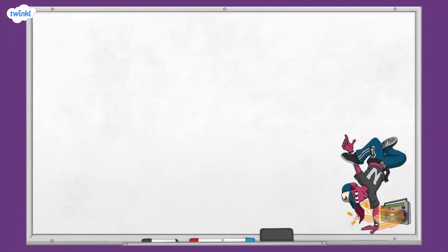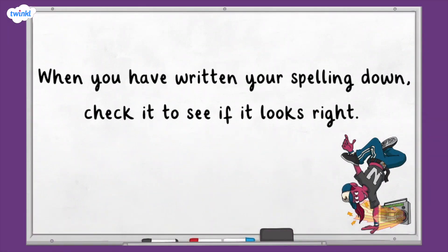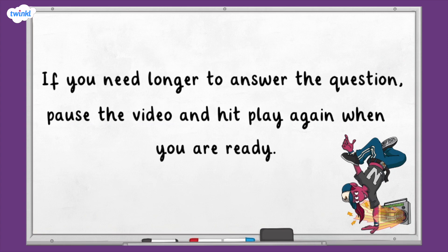For the final activity, you'll see a set of three sentences on the screen and each sentence will have a missing word. I'll say the word, then the word within a sentence, and then I'll repeat the word again. A 10-second timer will then appear on screen and you'll have until the timer runs out to write the missing word on a piece of paper or a whiteboard. Here's a top tip: when you've written your spelling down, check it to see if it looks right. If it doesn't, put a line through it and have another go. If at any point you need longer to answer the question, pause the video and then hit play again when you're ready. When the time is finished, the answer will be revealed. Good luck!